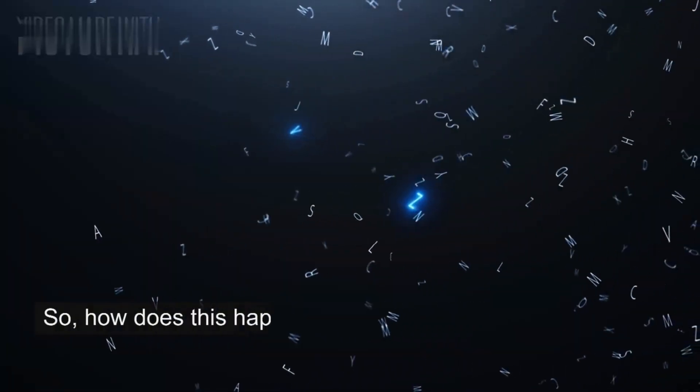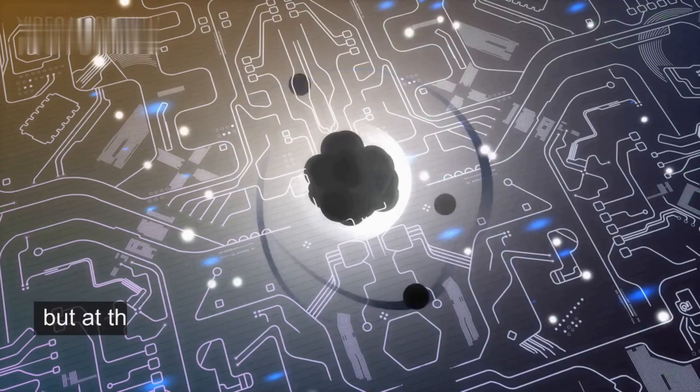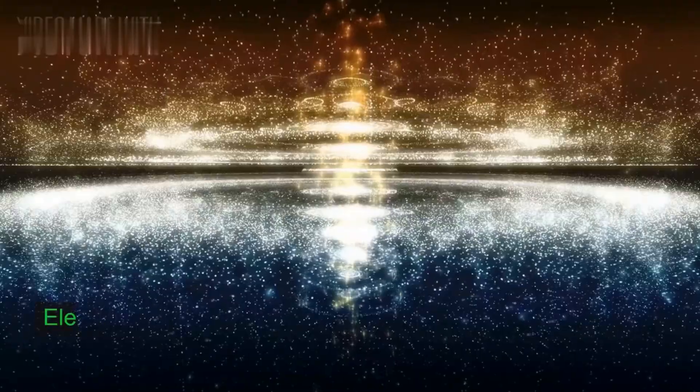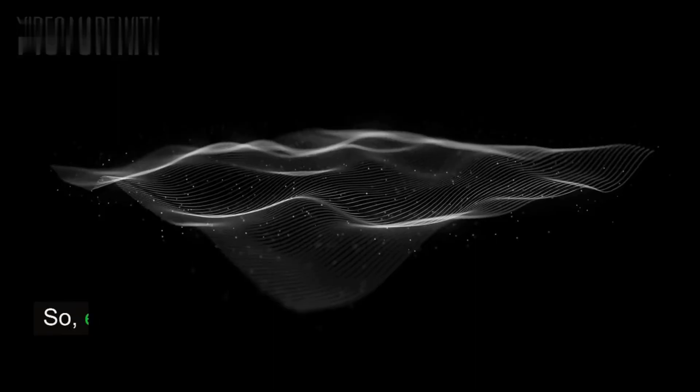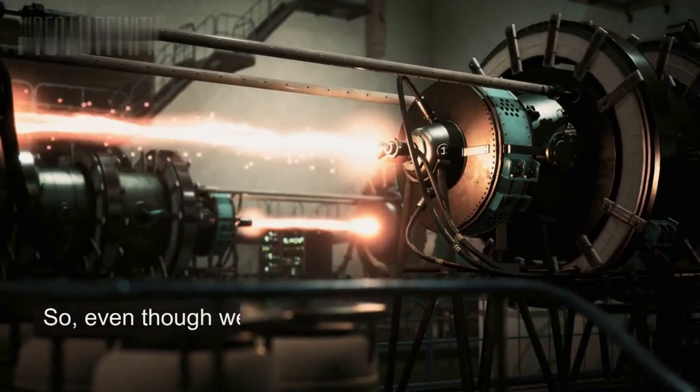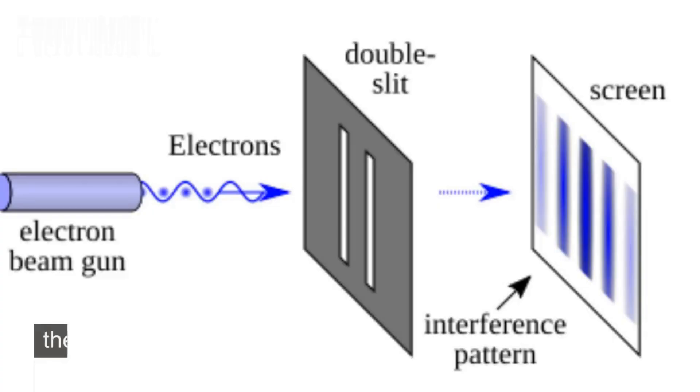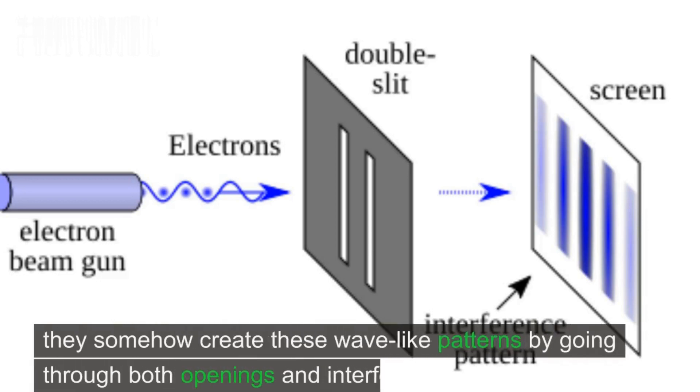How does this happen? Normally, we think of particles as solid things that follow a specific path, but at the quantum level, things are different. Electrons can act like tiny waves spreading out and interfering with each other. Electrons behave like both particles and waves. Even though we shoot the electrons one at a time, they somehow create these wave-like patterns by going through both openings and interfering with themselves.